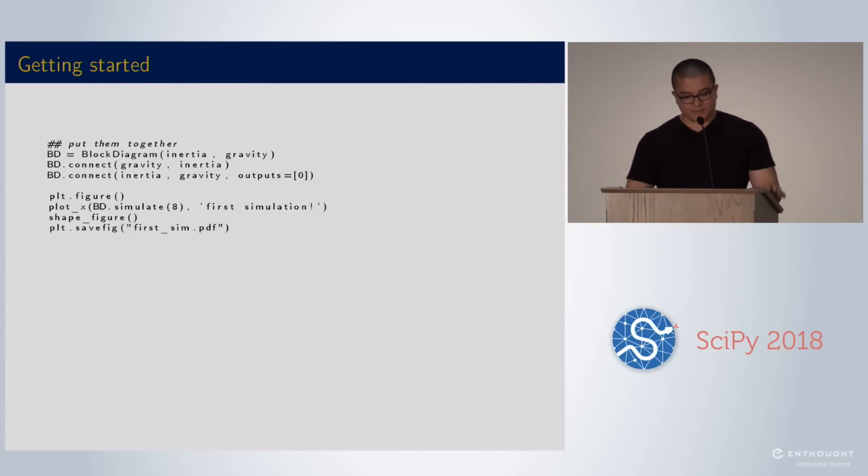Then we put them together. You declare a block diagram. You pass it your two systems. You connect them. Gravity has only one output and the inertia has one input, the force being acted on the joint. The inertia does have two outputs. So when we connect the gravity to the position, we have to tell it that it's the zero output, which is the position and not the velocity. Then we can go ahead and just do block diagram dot simulate and time.